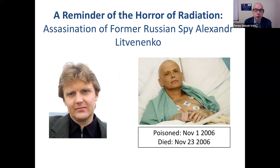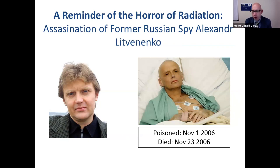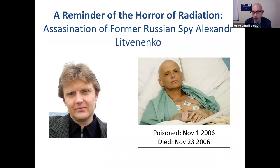A reminder of the horror of radiation: the assassination of former Russian spy Alexander Litvinenko in 2006. He was poisoned by the radioactive isotope Polonium-210, which has a 138-day half-life. He was poisoned in his tea in the UK on November 1st, 2006 and died on November 23rd — only 22 days later. You can see from photographs how he suffered.